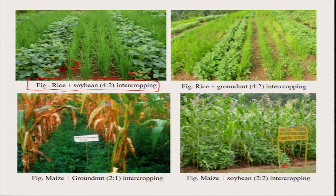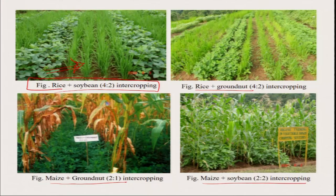Similarly, we can go for rice plus groundnut — 4 lines of rice along with 2 lines of groundnut. Not only rice, but in cereal-based cropping systems under organic farming we also promote maize plus groundnut intercropping and maize plus soybean intercropping. When doing intercropping, we have to take care that crops should not compete with each other — their nutrient demands should not coincide, and their harvesting periods should align so there is synergy between the crops for maximum benefit.